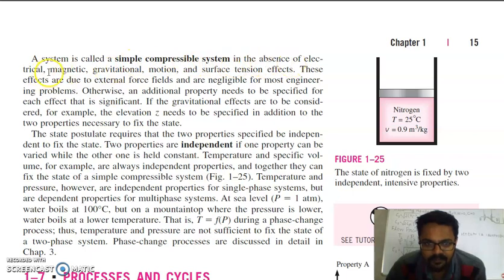A system is called a simple compressible system in the absence of electrical, magnetic, gravitational, motion, and surface tension. We will not consider these effects here right now. Electrical, magnetic, gravitational, and motion—we will neglect these things. These effects are due to external force fields and are negligible for most engineering problems.